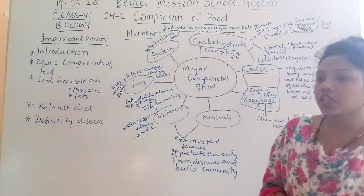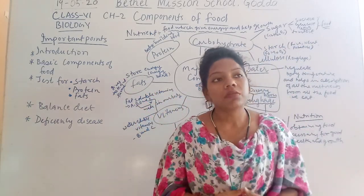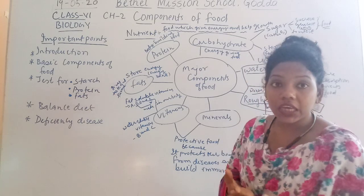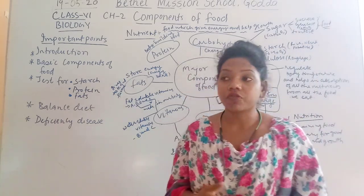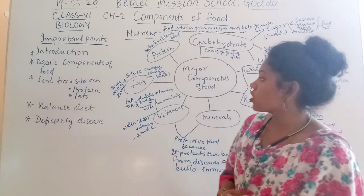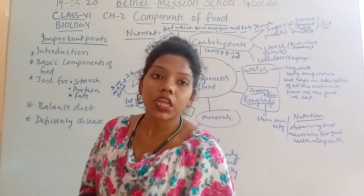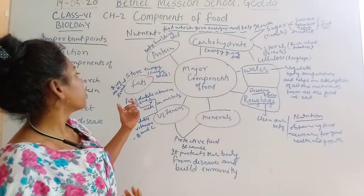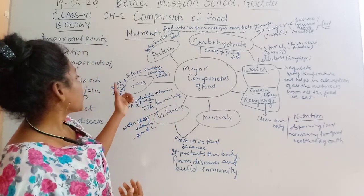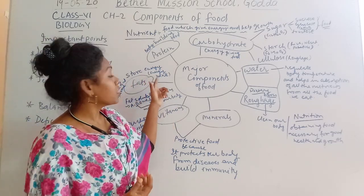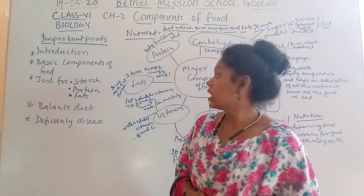Another component is fats. Fats are mainly found in ghee, oil, and butter — these are the main sources of fats. Fats are stored in our liver in the form of glycogen. This fats is also called the energy bank because it stores energy in the form of fat.